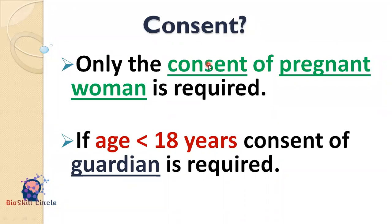Whose consent is required to perform MTP? The consent of the pregnant woman is the essential factor for termination of her pregnancy. The husband's consent is irrelevant. If the woman wants an abortion but her husband objects, the abortion can still be done. However, if the woman doesn't want an abortion but her husband wants it, it cannot be done. In the case of a woman whose age is less than 18 years, consent of a guardian is required. Guardian consent is also required in the case of minors or those of unsound mind.